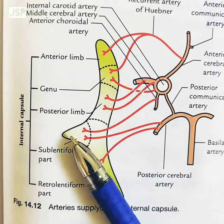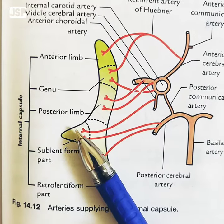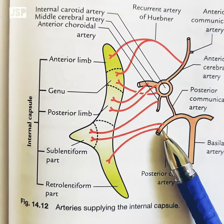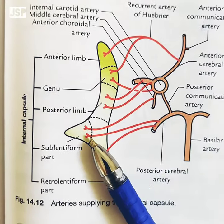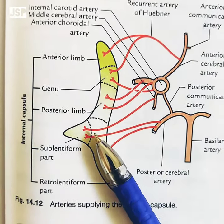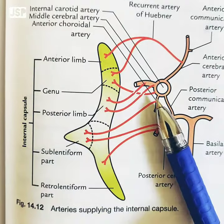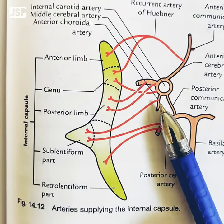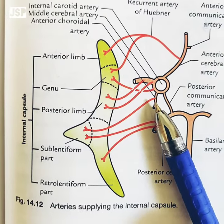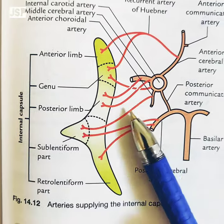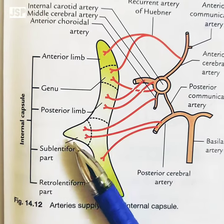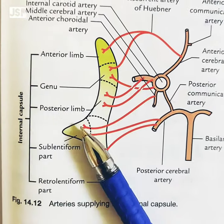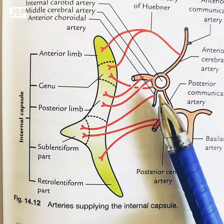Coming to the sublentiform part — the sublentiform part is supplied by a branch from the posterior cerebral artery and also by the anterior choroidal artery. So the sublentiform is supplied by these two arteries: the posterior cerebral artery and the anterior choroidal artery.